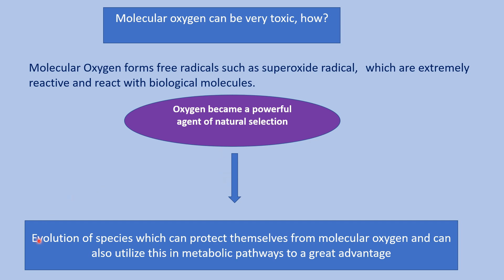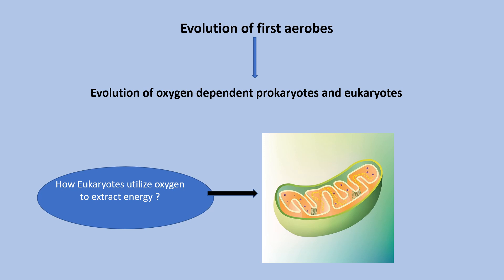Oxygen-dependent natural selection favored evolution of species which can protect themselves from molecular oxygen and can also utilize it in metabolic pathways to a greater advantage. Because of oxygen-dependent natural selection, evolution of first aerobes took place. From these first aerobes, evolution of oxygen-dependent prokaryotes and eukaryotes took place. And how do eukaryotes utilize oxygen to extract energy? Because they have an organelle called mitochondria, which is also called the powerhouse of the cell.